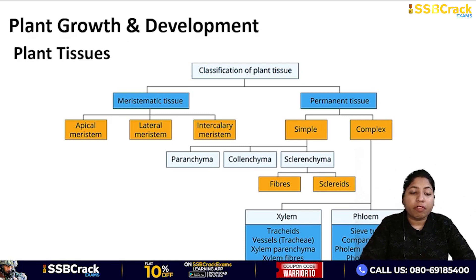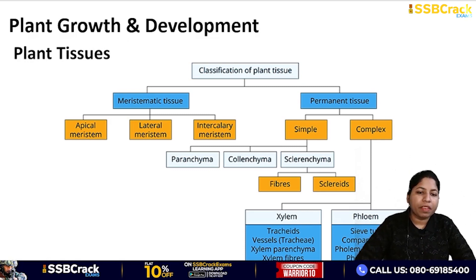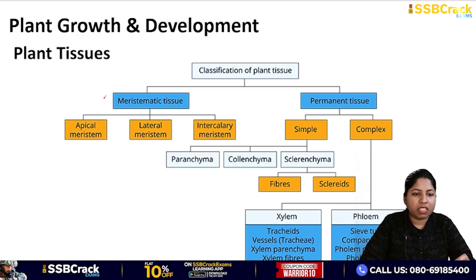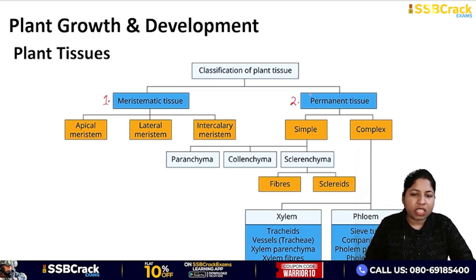Now if you talk about the plant tissues, look at this table — the classification of plant tissues. Plants are categorized into two parts: one is meristematic tissue and the other is permanent tissue.